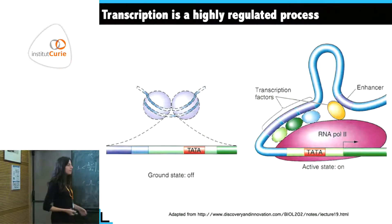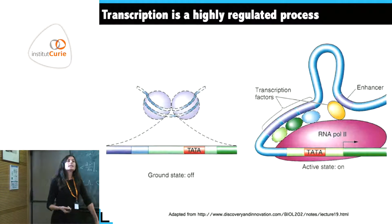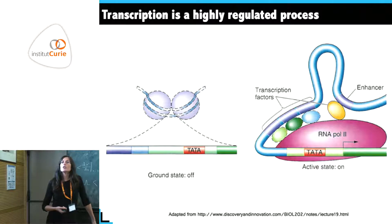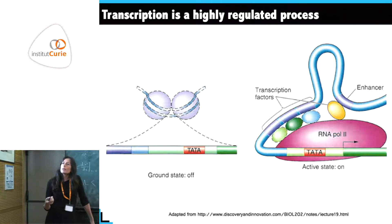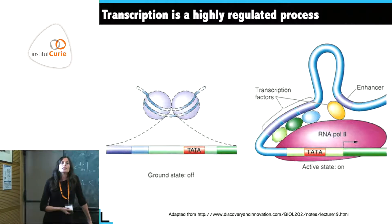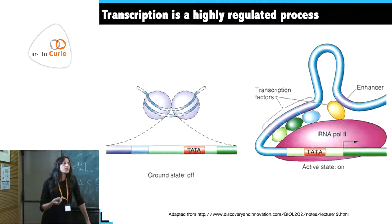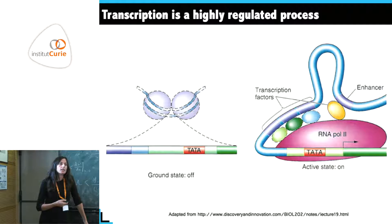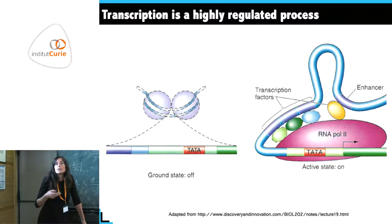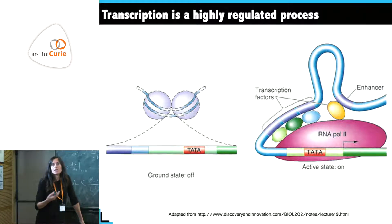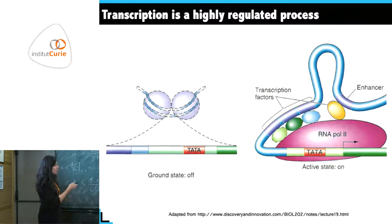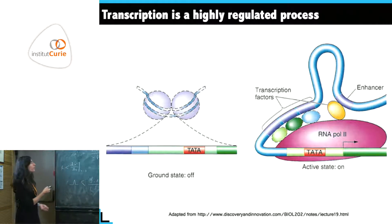In mammalian cells, this regulation is a bit more complex than in bacteria. In bacteria the ground state is 'on' and most of the time you have to bring a repressor to go to the 'off' state, while in mammalian cells the ground state is 'off'.